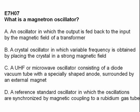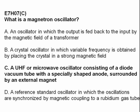What is a magnetron oscillator? A: an oscillator in which the output is fed back by a magnetic field of a transformer; B: a crystal oscillator where variable frequency is obtained by placing the crystal in a strong magnetic field; C: a UHF or microwave oscillator consisting of a diode vacuum tube with a specially shaped anode surrounded by an external magnet; or D: a reference standard oscillator synchronized by magnetic coupling to a rubidium gas tube. Answer: C — a UHF or microwave oscillator consisting of a diode vacuum tube with a specifically shaped anode surrounded by an external magnet.